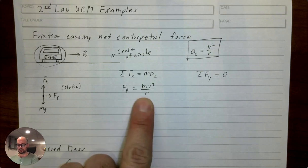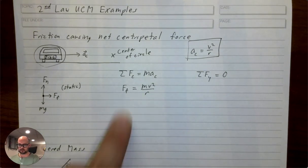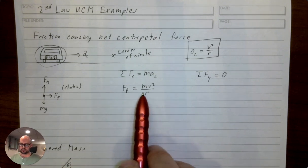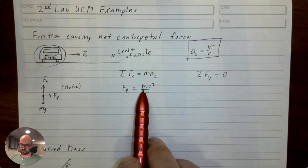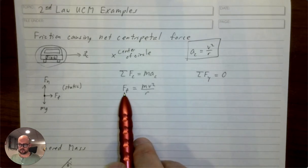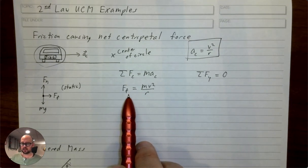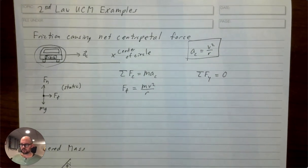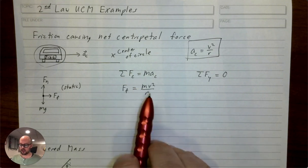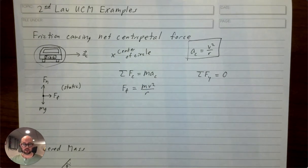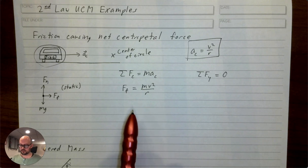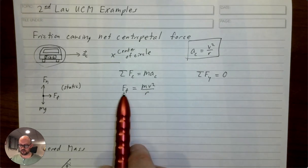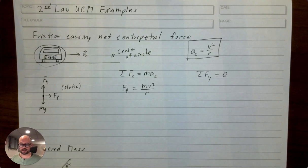Centripetal acceleration is v²/r, so we can apply that to Newton's second law. The more massive your car, the bigger the friction force needs to be to keep you in that circle. And the faster you go, the bigger the friction force has to be. So let's dive into that a little more — instead of the force of friction, I want to talk about the coefficient of friction.